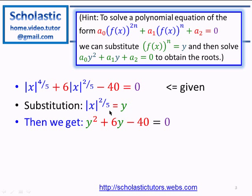Now we need to find the roots of this quadratic equation by factoring. The factor pairs of 40 are: 1×40, 2×20, 4×10, and 5×8. We need the pair whose difference gives the middle term coefficient of 6. Selecting 4 and 10: 10 minus 4 equals 6.